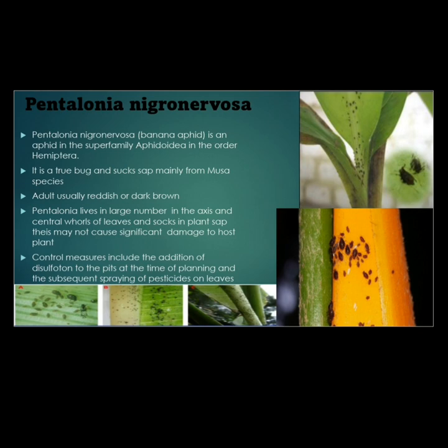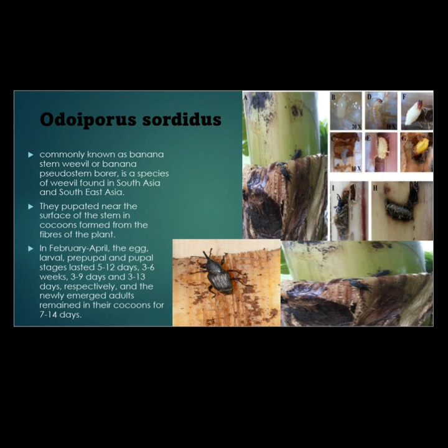Odioporus longicollis is a species of weevil commonly found in South and Southeast Asia, also known as the banana stem weevil. In cocoons formed from plant fibers, they pupate near the surface of the stem. During the months of February to April, the egg, larval, pre-pupal, and pupal stages last from 5 to 12 days, 3 to 6 weeks, 3 to 9 days, and 3 to 30 days respectively. The newly emerging adults remain in their cocoons for 7 to 40 days.